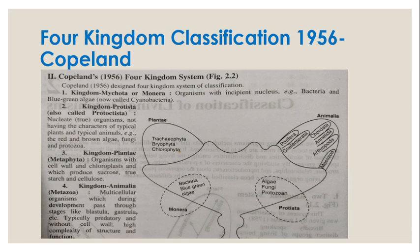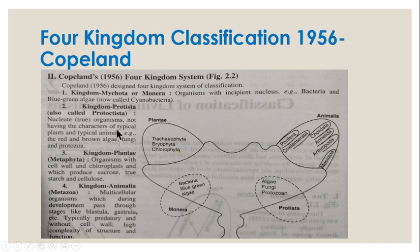Then came the four kingdom classification given by Copeland. In this case, there is inclusion of two more terms: Monera and Protesta. So he gave four kingdoms — initially we were having Plantae and Animalia, so he included Protesta and Monera. In the case of Monera, all prokaryotic organisms having the incipient nucleus, including bacteria and blue-green algae, were included. The term Protesta was given by Ernest Haeckel, who included eukaryotes with photosynthetic capacity as well as non-photosynthetic organisms, including protozoa, algae and fungi.